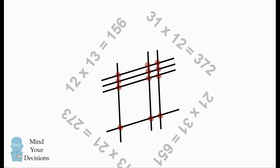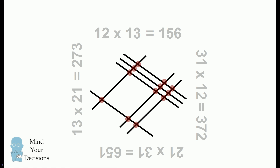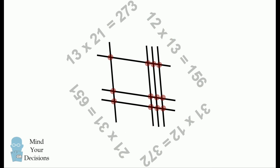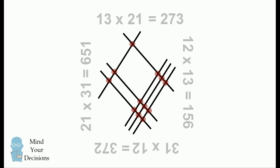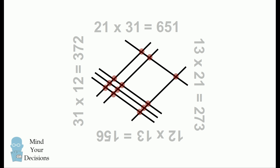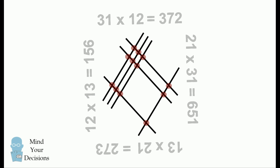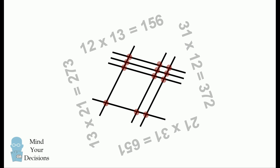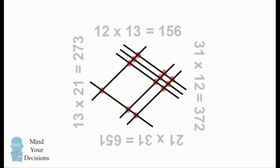If we rotate one more time, we're back to our original problem of 12 by 13. With this one diagram, we can solve four different problems depending on how you orient it. It's really amazing that there's a hidden geometry to arithmetic. Even though millions of people have seen videos about multiplying numbers by drawing lines, this is the first time a video has been made to show how you can rotate the diagram and solve other problems. This connects geometry and arithmetic in a completely surprising way.